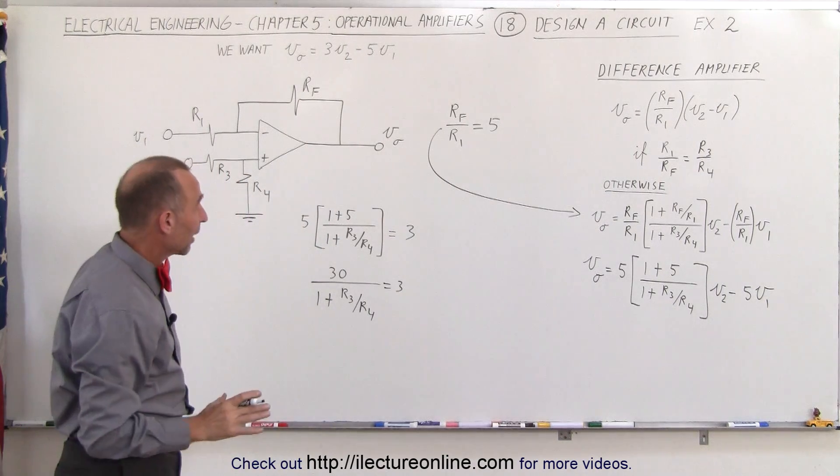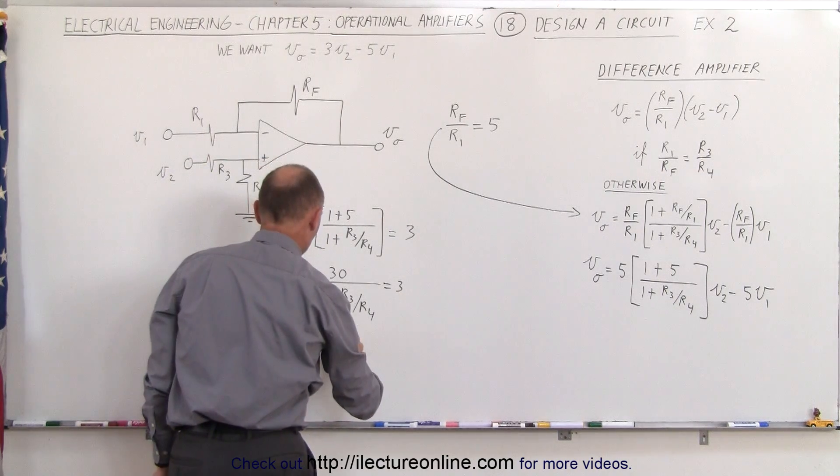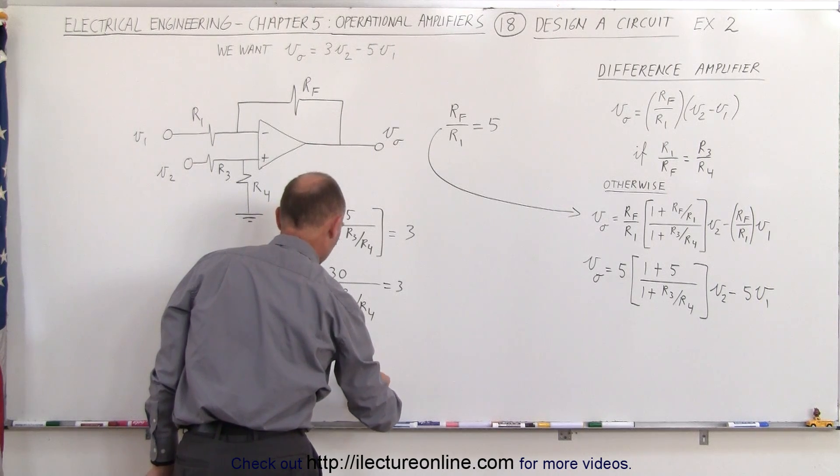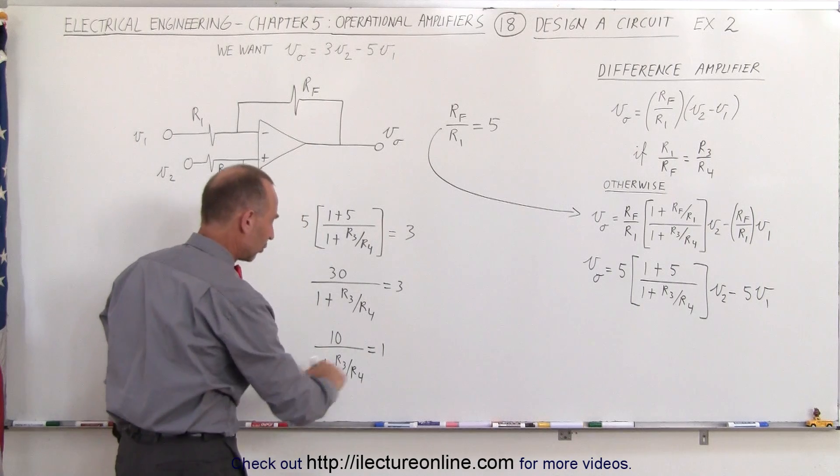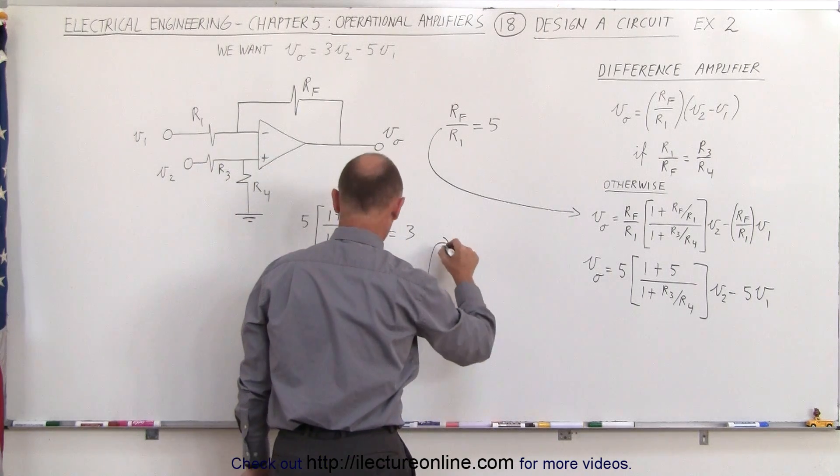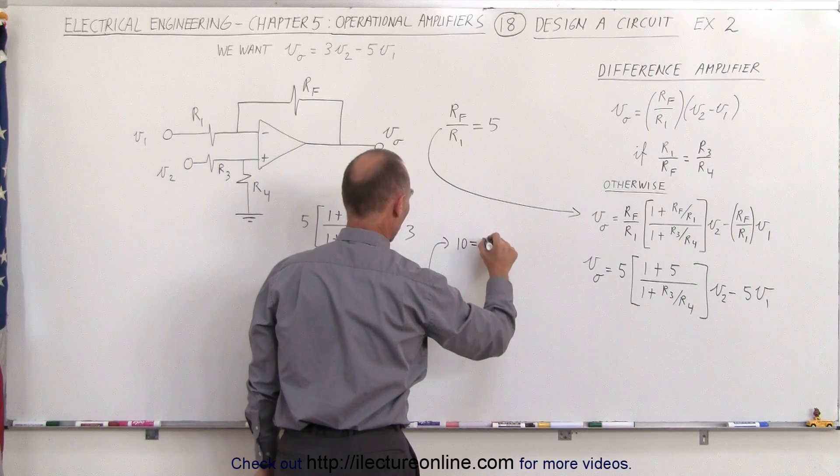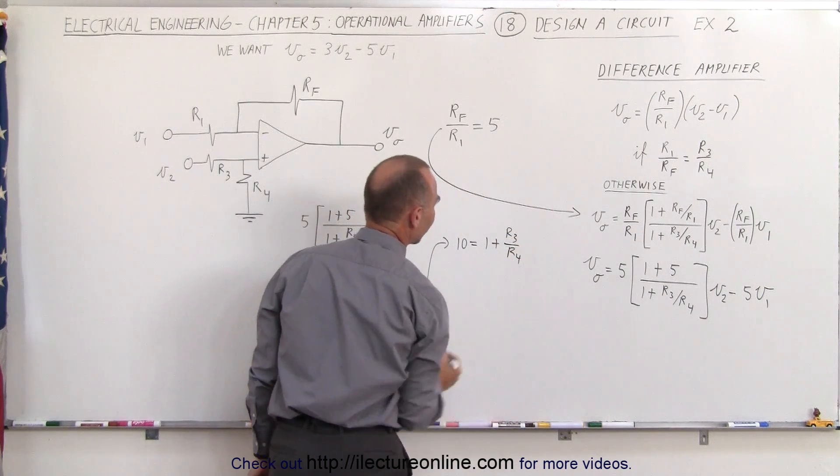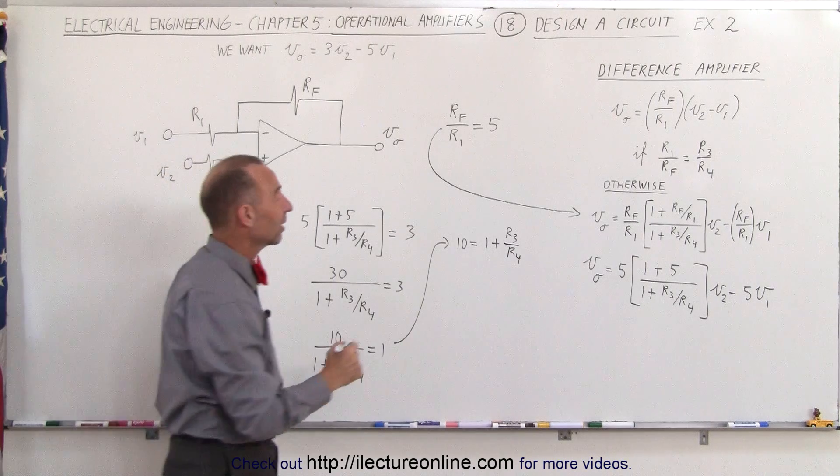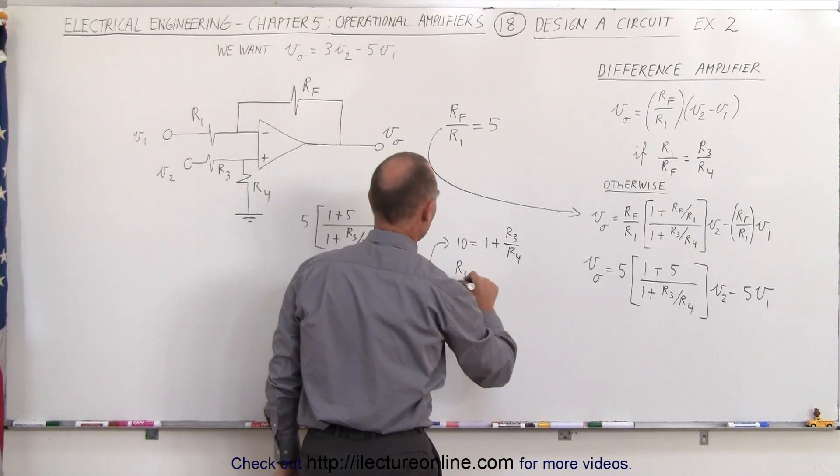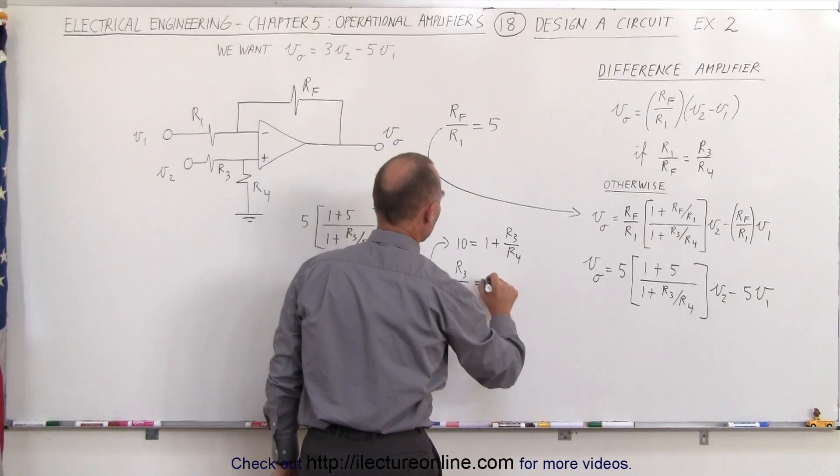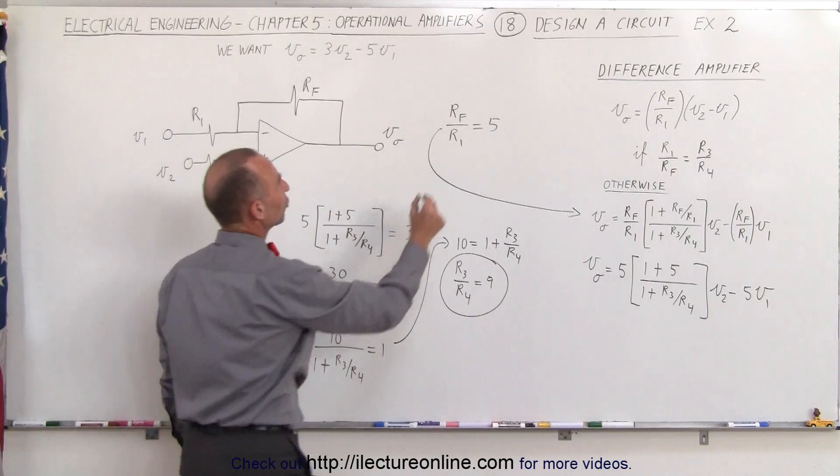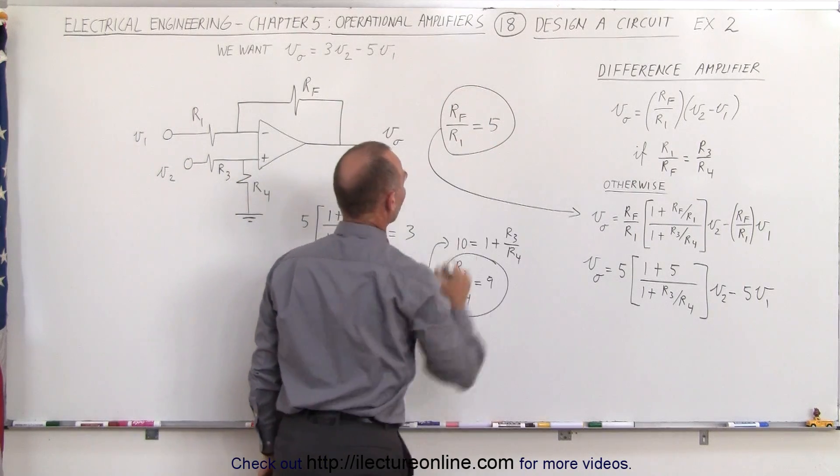Next we'll divide both sides by 3 to simplify it. So we end up with 10 divided by 1 plus R3 over R4 is equal to 1. Let's cross multiply. So here we get 10 is equal to 1 plus R3 divided by R4 and finally when we subtract 1 from both sides and turn the equation around we get R3 divided by R4 must equal 9. So the ratio of those two resistors must equal 9 and the ratio of those two resistors must equal 5.